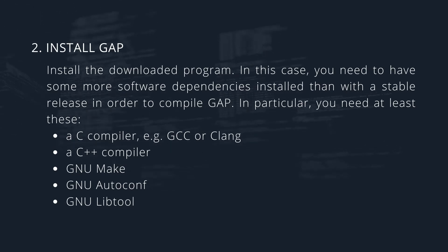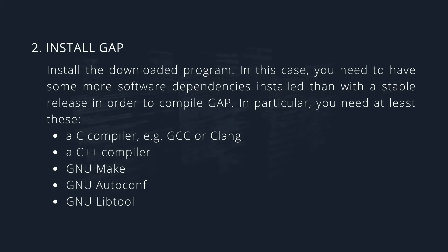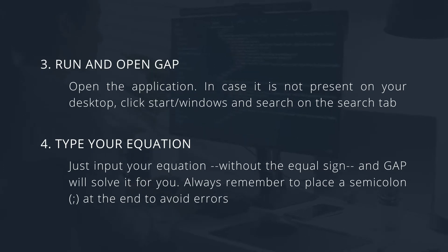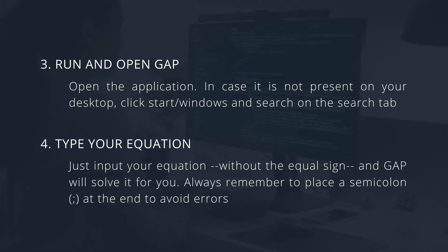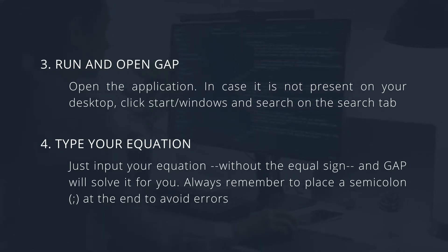Next is installing GAP. Install the downloaded program. You need to have some software dependencies installed to compile GAP. In particular, you need at least a C compiler, for example GCC or Clang, a C++ compiler, GNU make, GNU autoconf, and GNU libtool. After that, run and open GAP. Open the application. In case it is not present on your desktop, click Start or Windows and search for GAP on the search tab. The application comes with documents, a tutorial, and a manual as a guide for using it. Type your equation — just input your equation without the equal sign and GAP will solve it for you. Always remember to place a semicolon at the end to avoid errors.